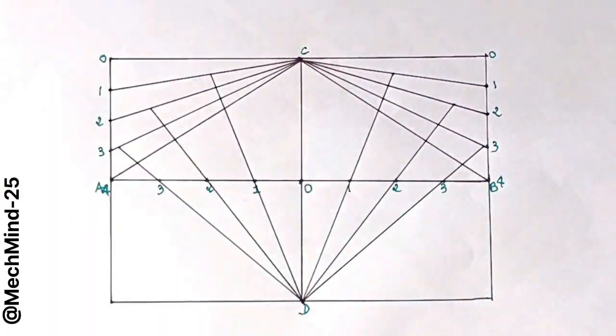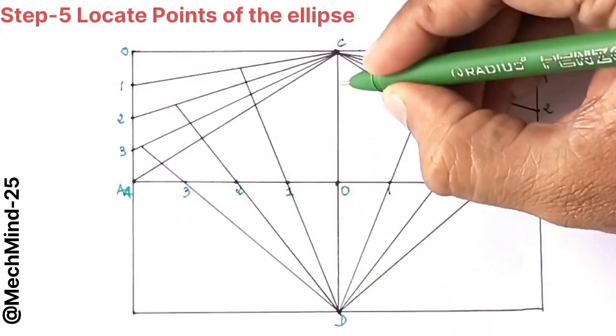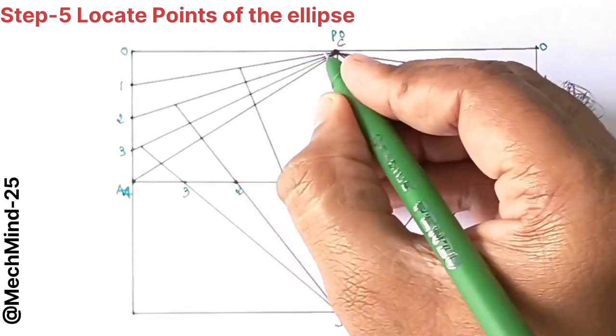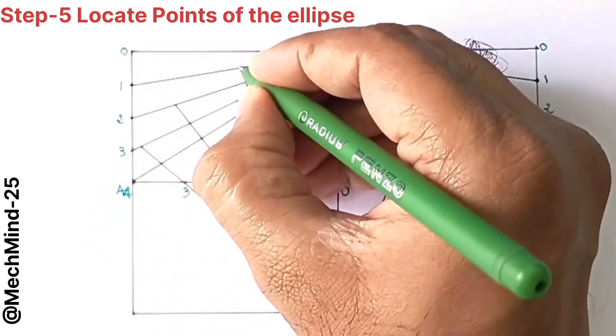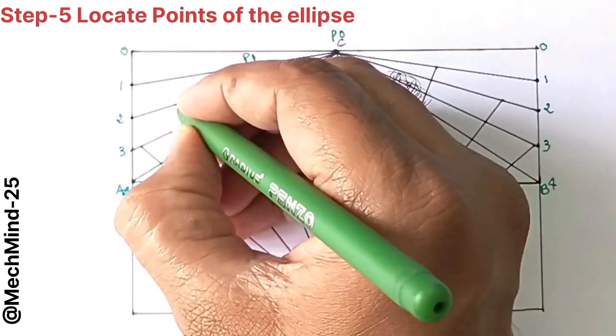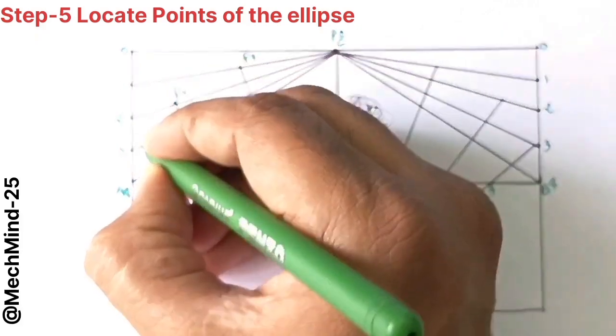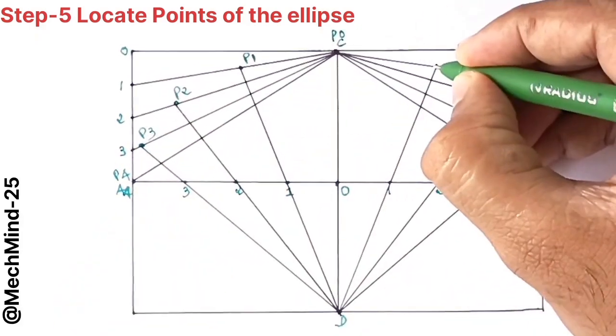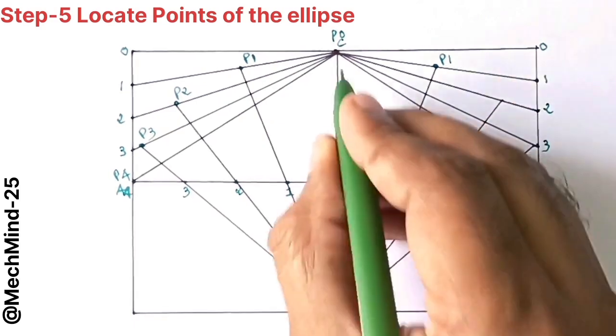Now observe the intersection points formed inside the rectangle. Mark all the intersection points carefully. These are the location points through which our ellipse will pass. Name them as P0, P1, P2, P3 and P4.